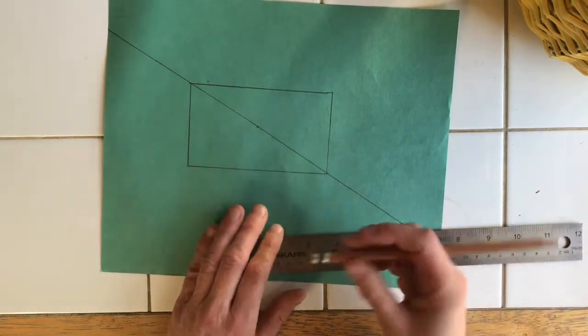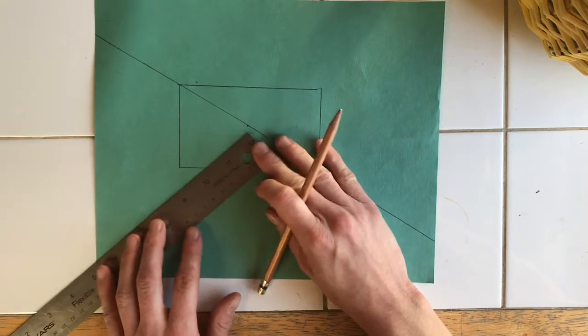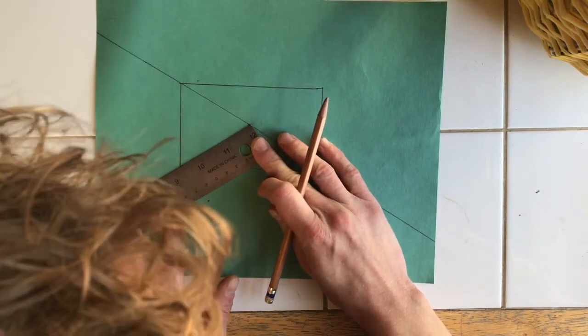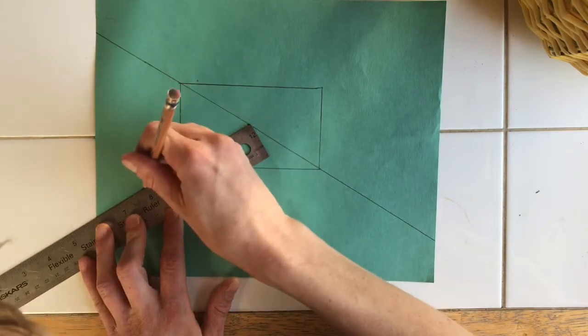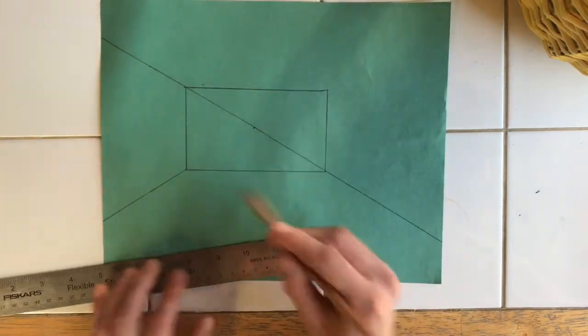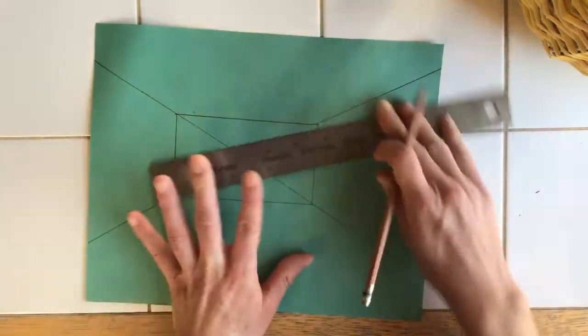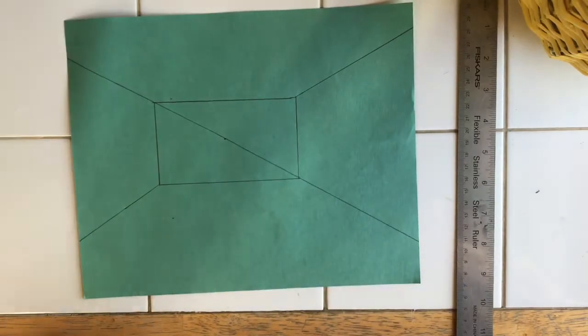Draw these lines lightly because you'll be erasing part of them. In fact, you can even skip drawing through the box and if you're confident in how you've lined it up, you can simply start at the corner of the box and draw out. And that way you don't have to erase it after. Okay, I have my four sides drawn.